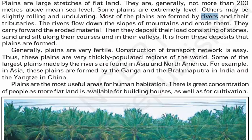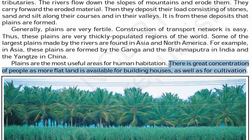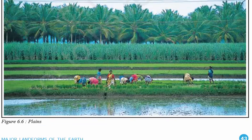Generally, plains are very fertile and construction of transport networks is easy. Thus, plains are very quickly populated regions of the world. Some of the largest plains made by rivers are found in Asia and North America. These plains are formed by the Ganga and the Brahmaputra in India and the Yangtze in China. Plains are the most useful areas for human habitation with great concentration of people, as more flat land is available for building houses as well as cultivation. Had it been hilly, it would be difficult to carry out irrigation as water would not remain stable.